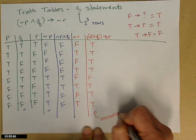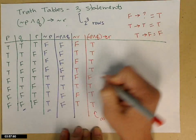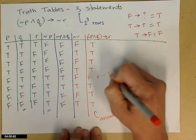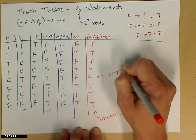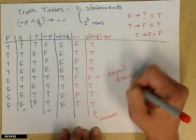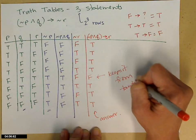Be careful — it's trying to be a tautology, all trues. But it's not, because I have that one false right there. That one false keeps it from being a tautology — always true.